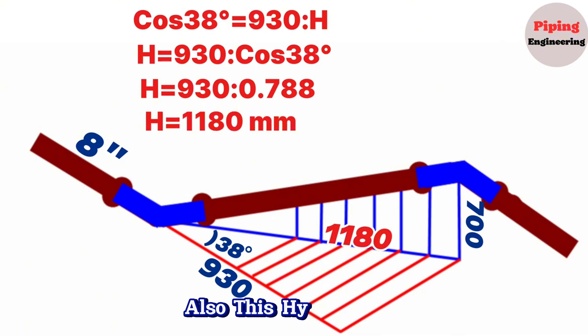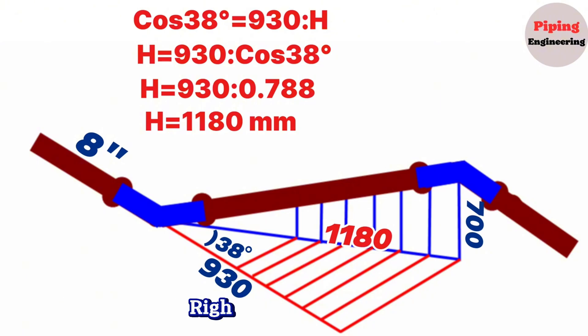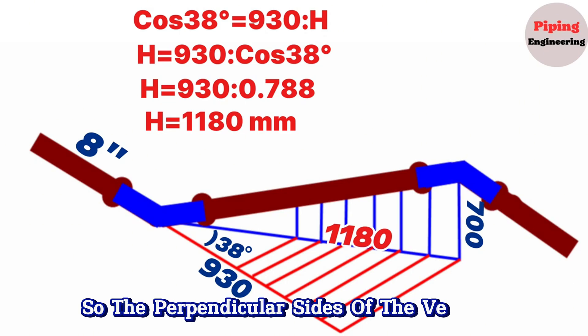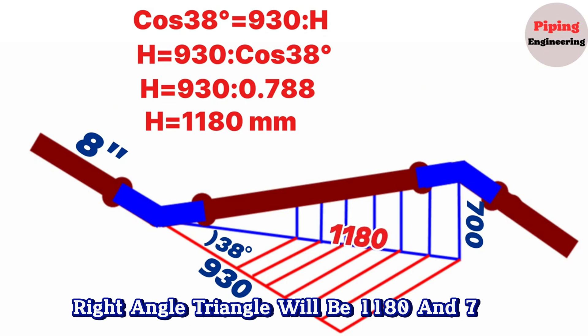Also, this hypotenuse is one of the perpendicular sides of the vertical right-angle triangle. So the perpendicular sides of the vertical right-angle triangle will be 1180mm and 700mm.